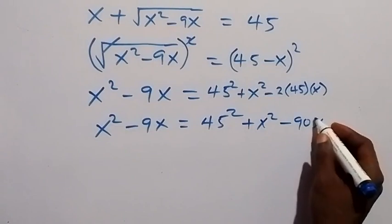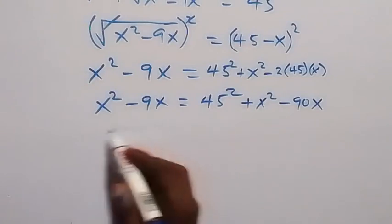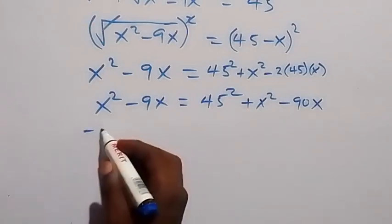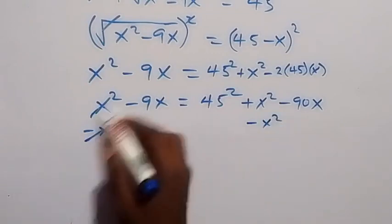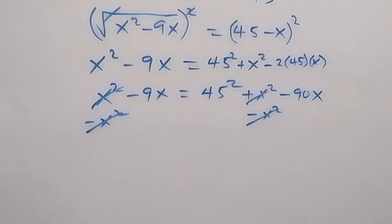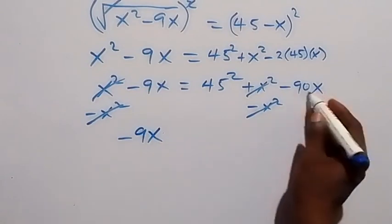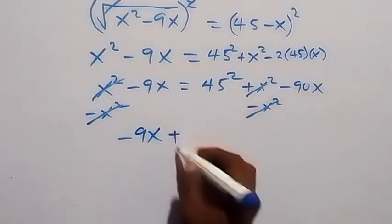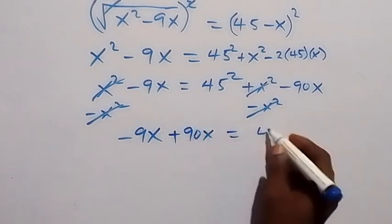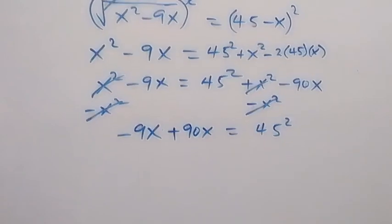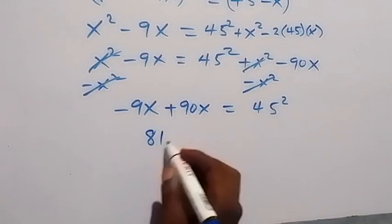We subtract x squared from both sides — they cancel out. We are left with minus 9x on the left and plus 90x on the right, equals 45 squared. So minus 9x plus 90x gives us 81x, which equals 45 squared.